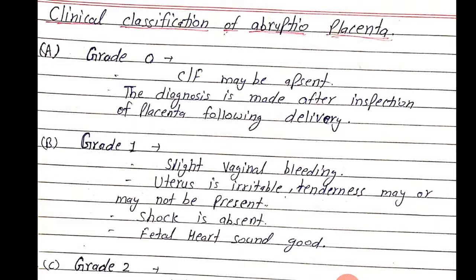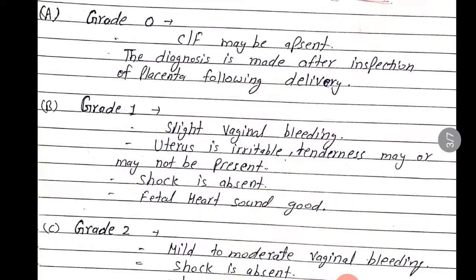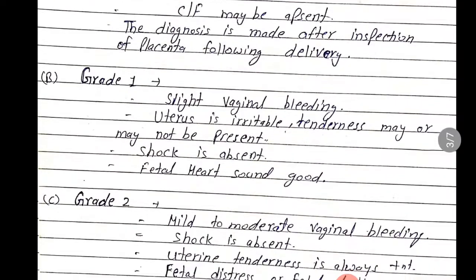Grade 1: slightly vaginal bleeding, uterus is irritable with tenderness felt. Fetal heart sound is not compromised. No complications present.